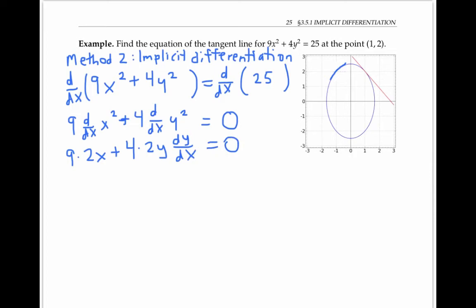Now I can solve for dy/dx, which is going to tell me the slope of my tangent line. And so I get -18x from here, divided by 8y from here, which simplifies to -9/4 times x/y. Notice that the formula for my derivative dy/dx has both x's and y's in it.